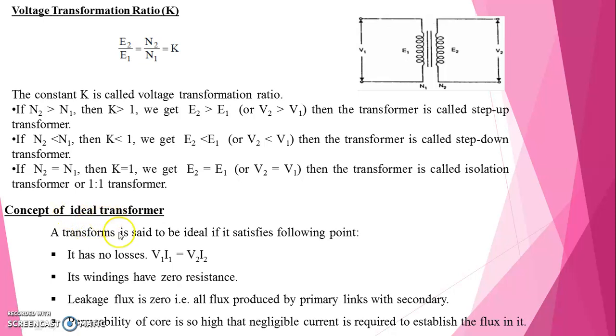Also we have to know concept of an ideal transformer. A transformer is said to be ideal if it satisfies the following points. It has no losses, V1 I1 is equal to V2 I2. Its windings have zero resistance. Leakage flux is zero, that is all flux produced by primary links with secondary. Permeability of core is so high that negligible current is required to establish the flux in it.